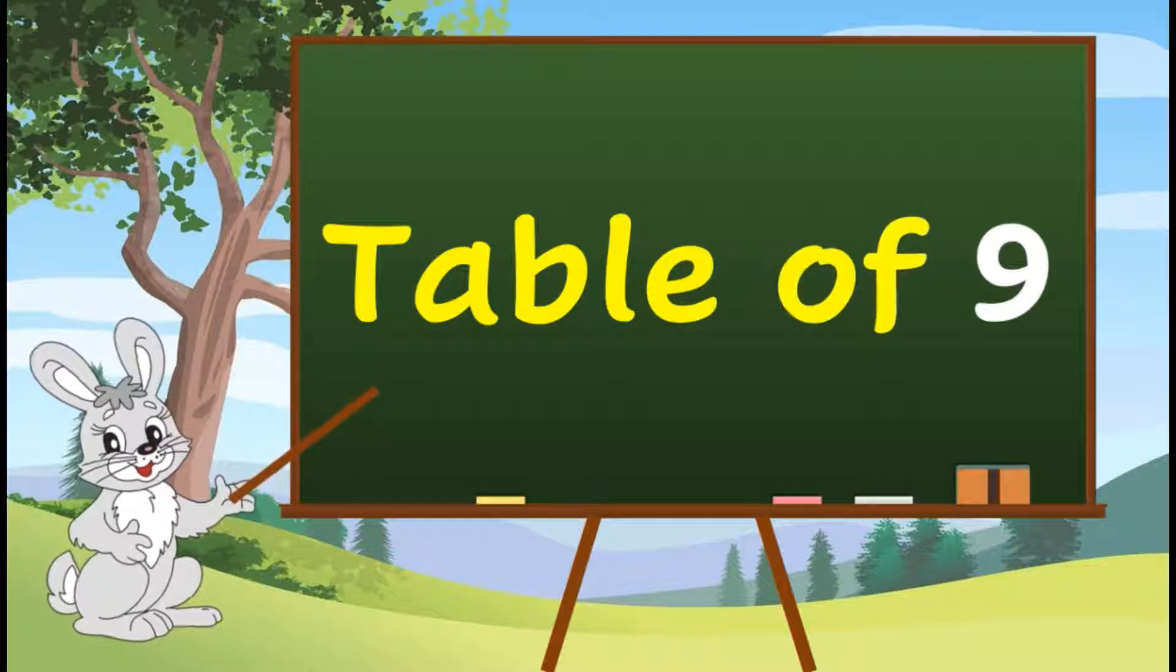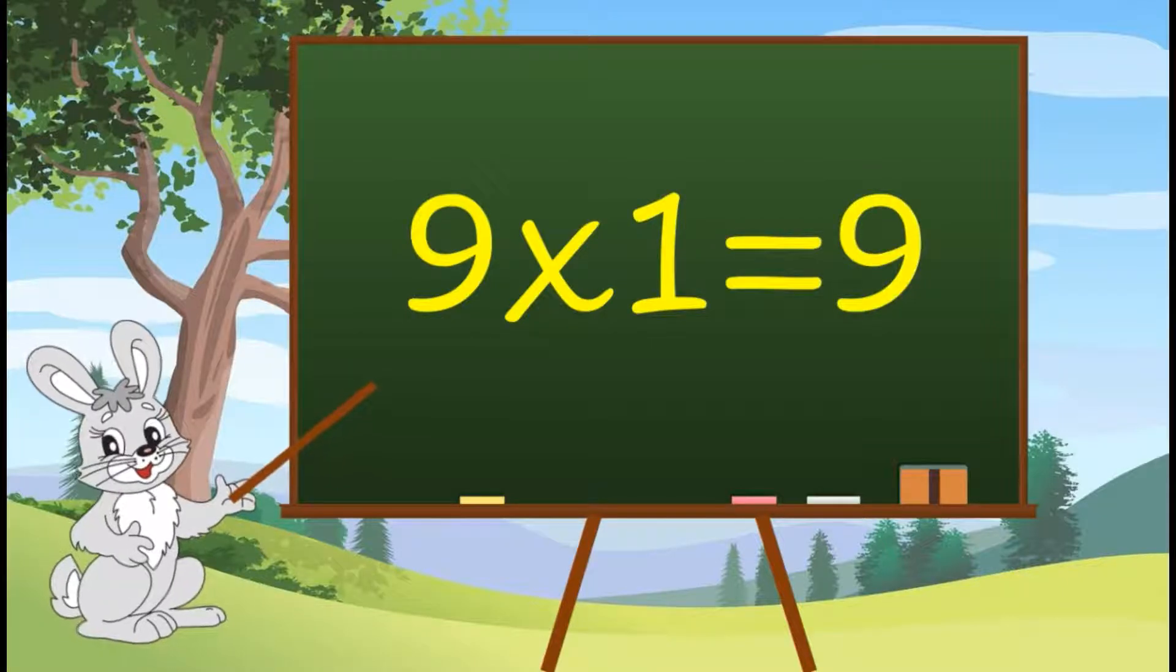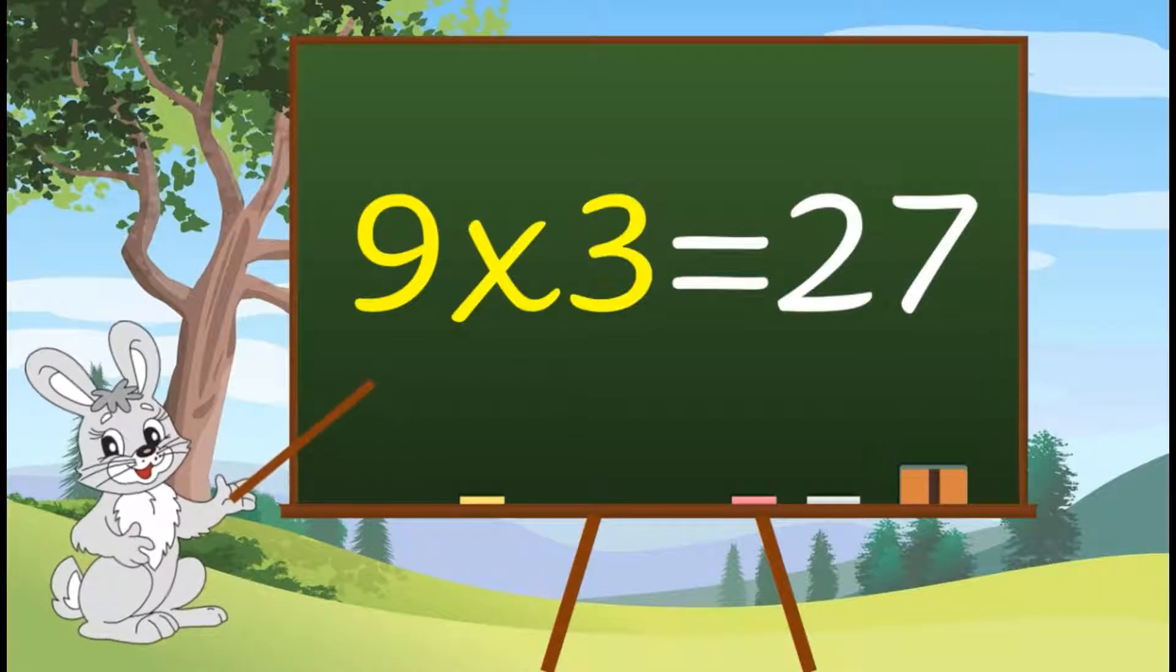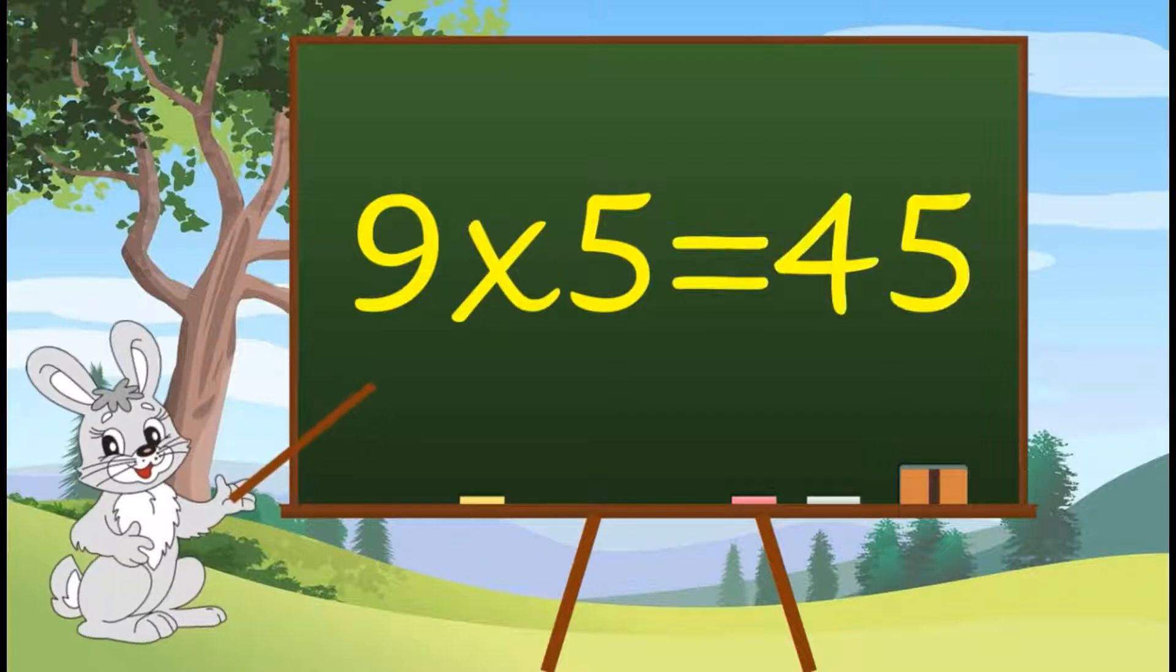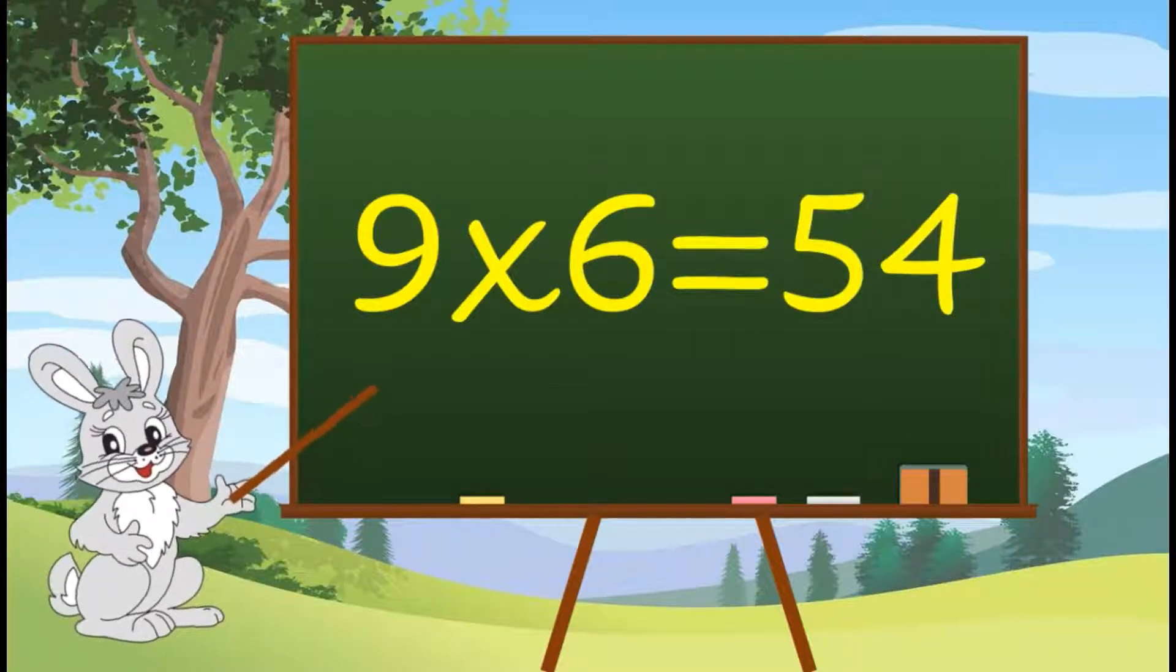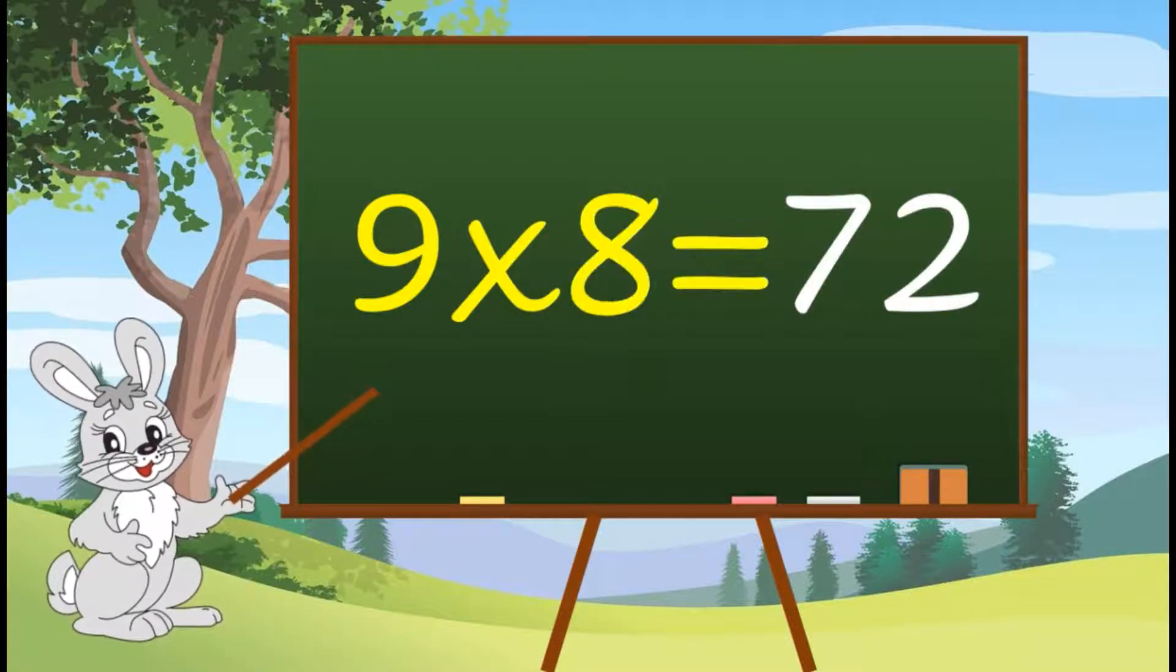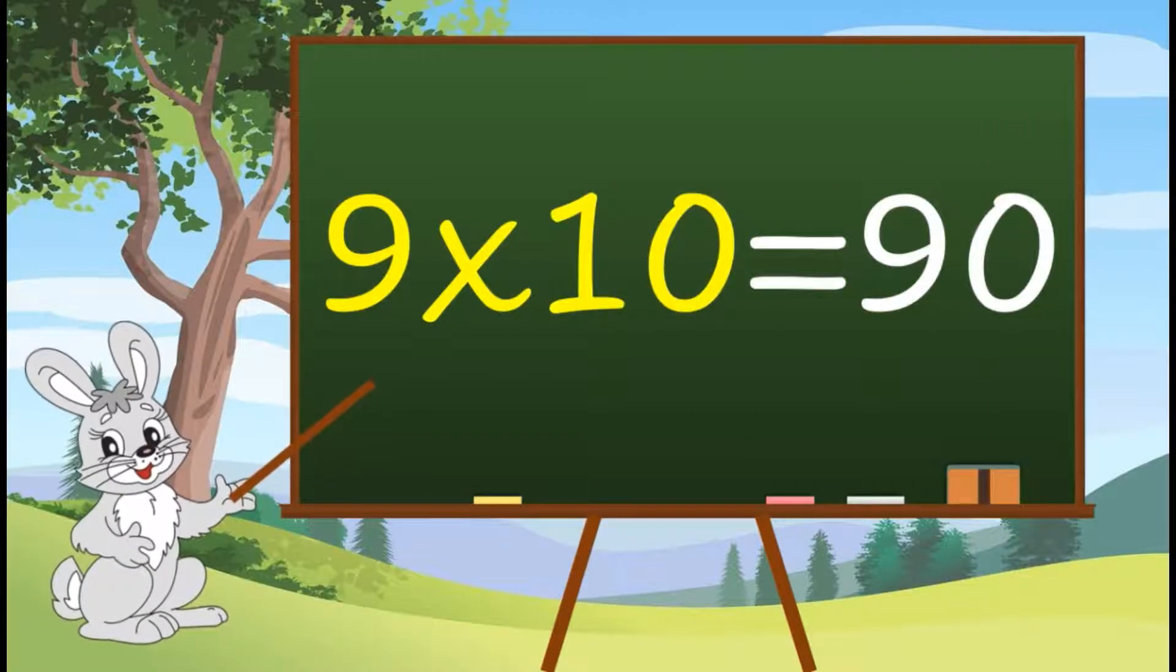Hi, today we will learn table of 9. So let's start: 9 1s are 9, 9 2s are 18, 9 3s are 27, 9 4s are 36, 9 5s are 45, 9 6s are 54, 9 7s are 53, 9 8s are 72, 9 9s are 81, 9 10s are 90.